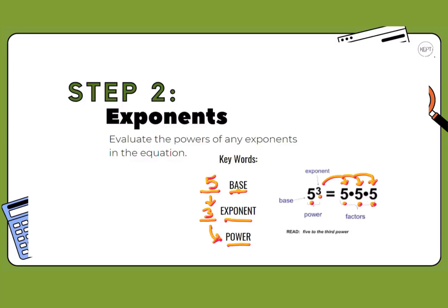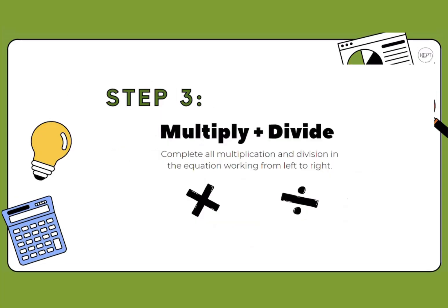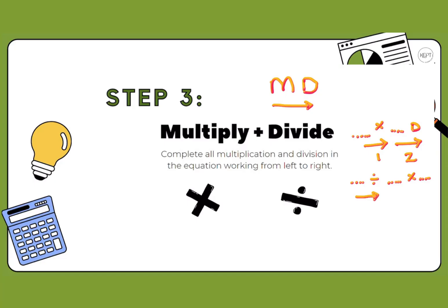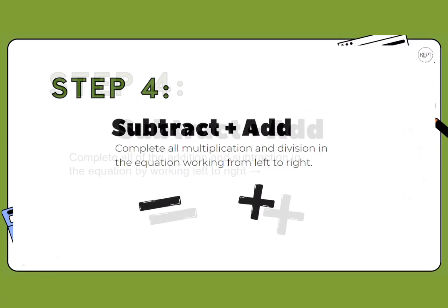The next step in solving order of operations problems is multiplication and division. We always work from left to right. If multiplication appears before division, we work multiplication first, then division. If division appears first, we work division before multiplication. We're always working left to right.